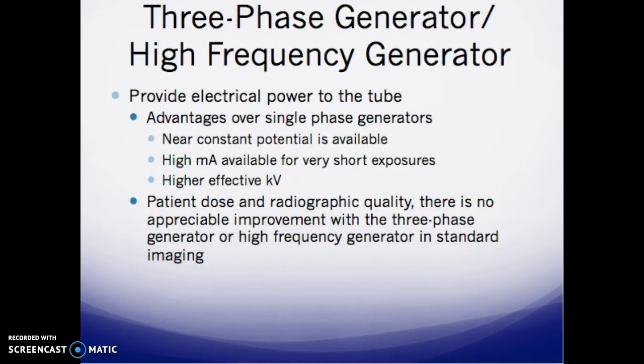Three-phase and high-frequency generators provide electrical power to the tube. Their advantages over single-phase include near-constant potential, higher MA for very short exposures, and high effective kV. However, there is no improvement in patient dose or radiographic quality between three-phase and high-frequency generators in standard imaging. All the specific numbers in this presentation — 0.25, 0.5 millimeters of lead, filtration values — will be on your national exam, so make sure you memorize them.